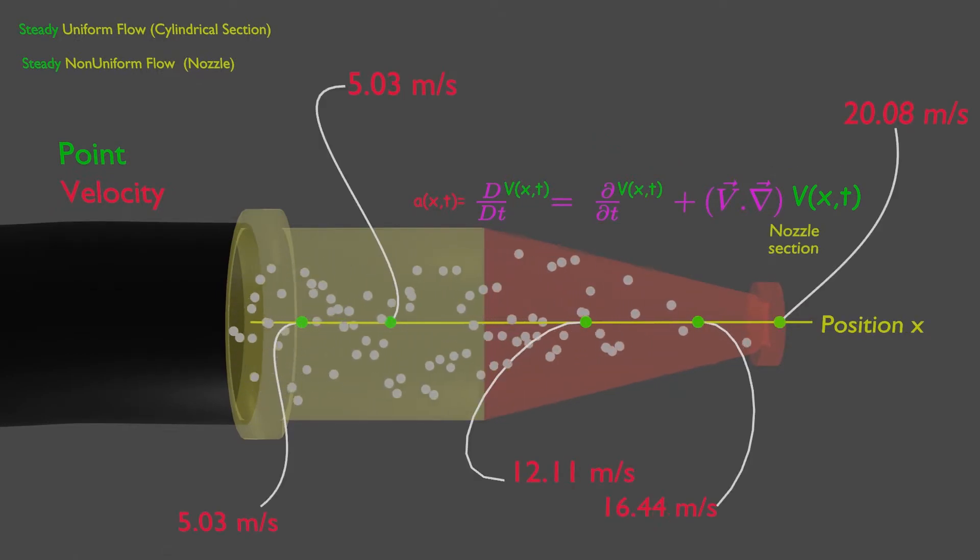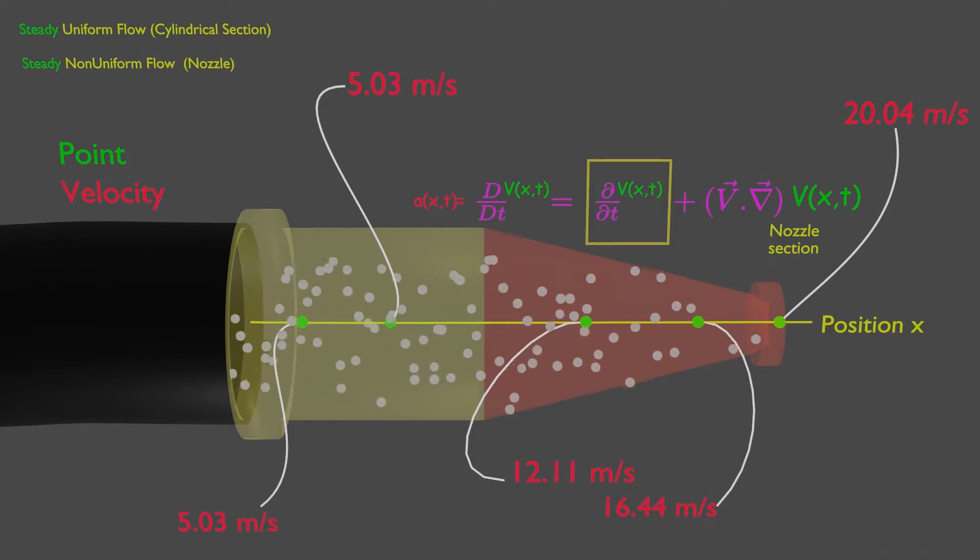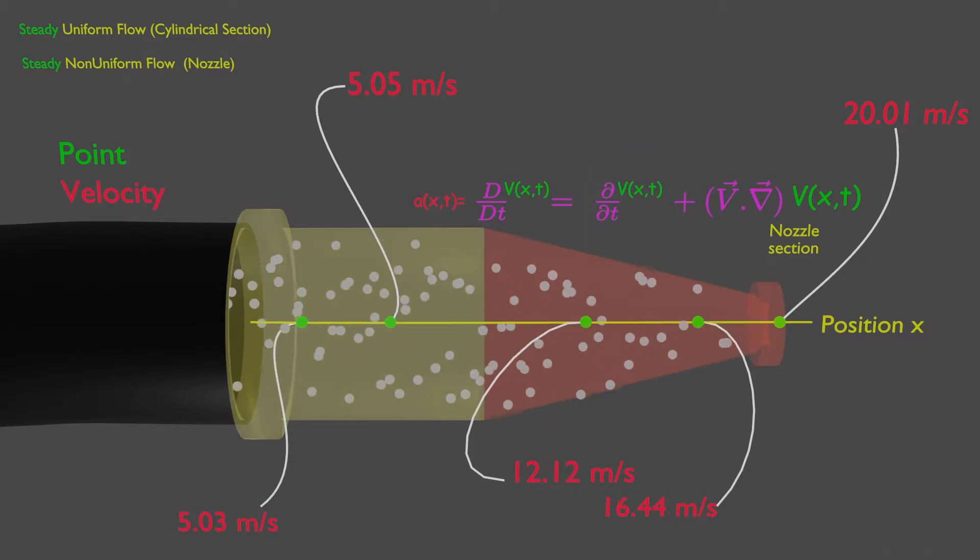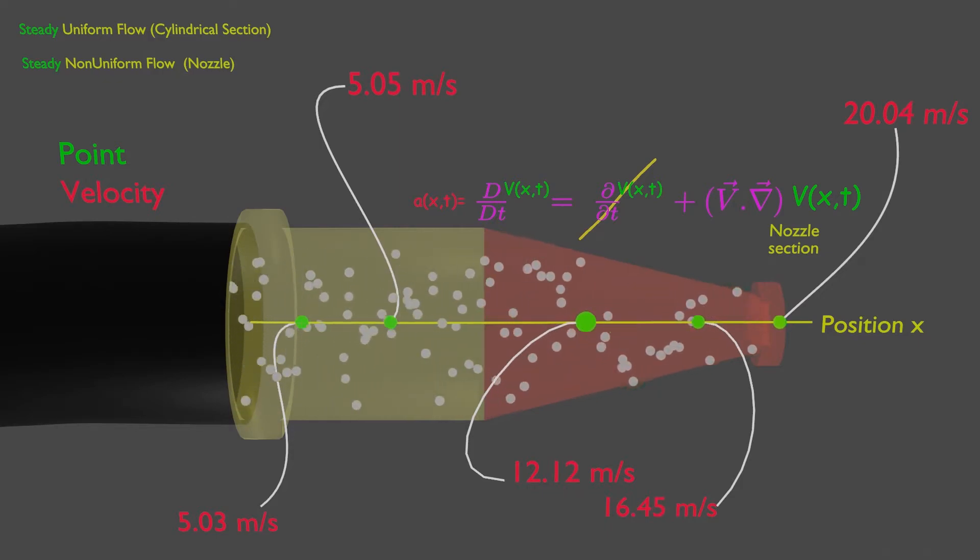So the first term on the right side indicates the time rate of change of the velocity of the particle. As the velocity at a fixed point is not changing with time, velocity is constant and steady. So partial derivative of this constant velocity at fixed point is always zero.